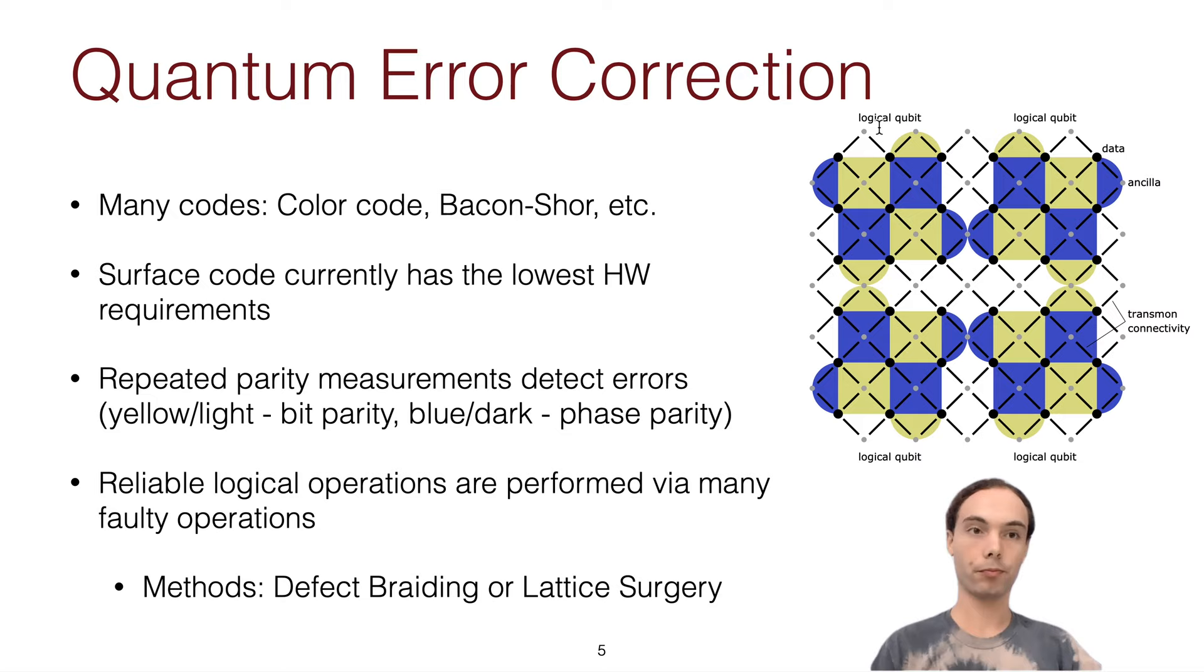To do two qubit gates to actually perform computation, there's methods, existing methods, called braiding or lattice surgery. And we use these also, but then show some additional operations that our architecture shows.